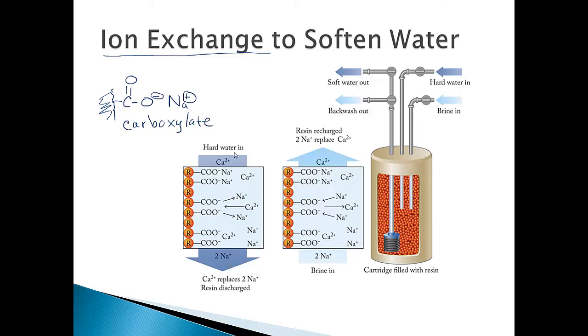What happens is the water that comes in with calcium and magnesium cations, they float in here, and it turns out that calcium and magnesium have a bit higher affinity for these carboxylates than the sodium cations do. So they'll go in and attach themselves to the carboxylates and displace the sodiums that were there. The sodiums get released, and sodium cations won't bind with things to precipitate. Remember our solubility rules, all sodium cations are soluble. So we're not going to make insoluble stuff. The sodium cations then flow out to your water source as soft water.